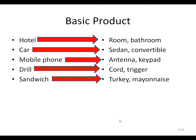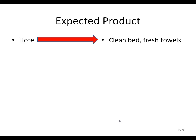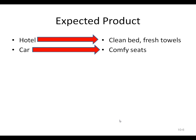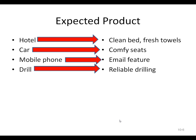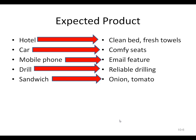A sandwich's basic product is turkey, mayonnaise, vegetables, bread. Moving outward to the expected product — for a hotel, we expect a clean bed, fresh towels, a quiet night to get some rest. For a car, we expect comfortable seats and a reliable engine. A mobile phone — we expect an email feature and no dropped calls. A drill — reliable drilling every time. A sandwich — we expect onion, tomato, and it to taste good. These are just things we expect from the physical product itself.